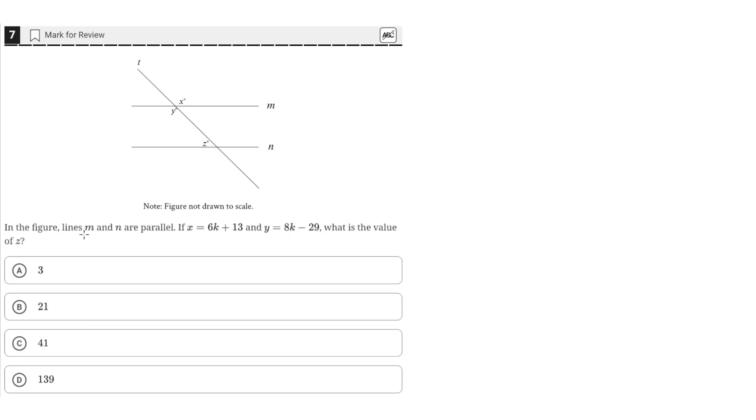In the figure, lines M and N are parallel. If X equals 6K plus 13 and Y equals 8K minus 29, what is the value of Z?